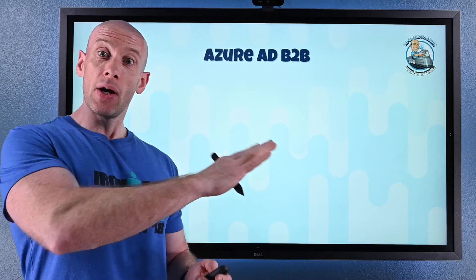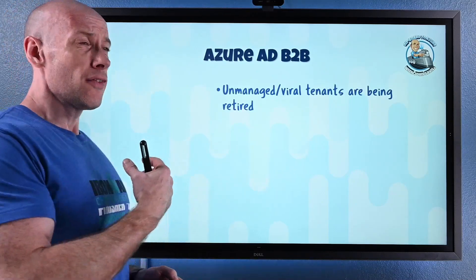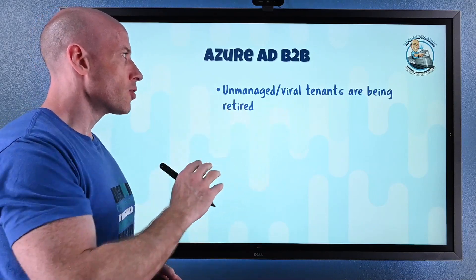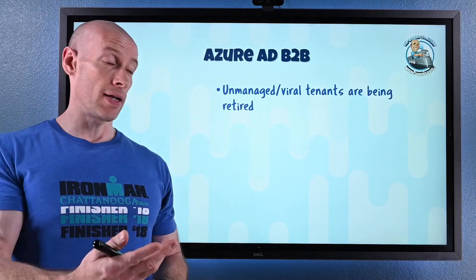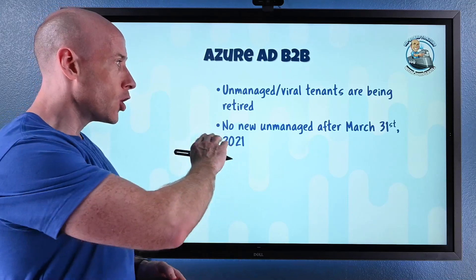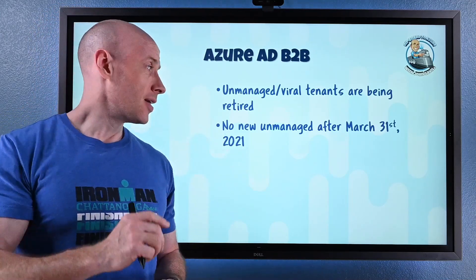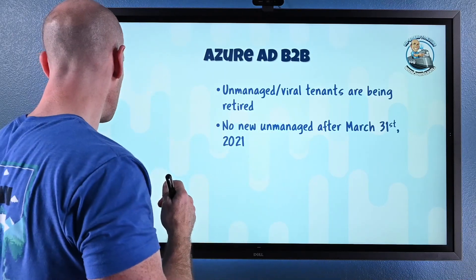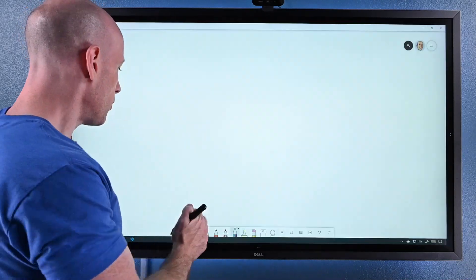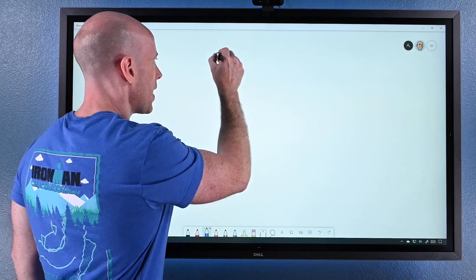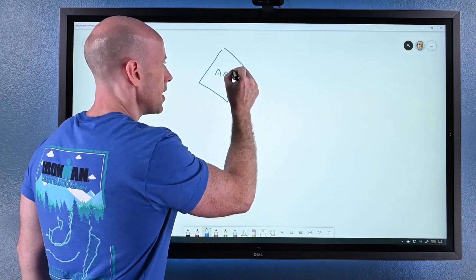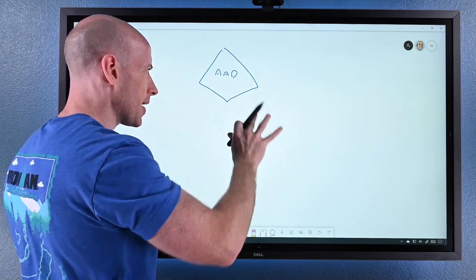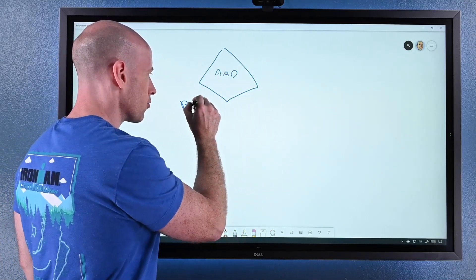Firstly, something is actually going away. For Azure AD B2B, business to business, unmanaged viral tenants are being retired. There will be no new unmanaged tenants after March 31st 2021. If you think about it — I have my Azure AD with SharePoint, Azure, and SaaS apps connected, and I have all these different kinds of resources.